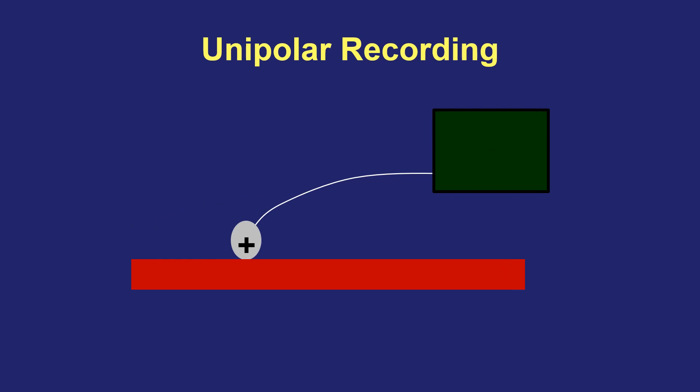Similarly, if the unipolar electrode is positioned in the middle of myocardial tissue and the wavefront originates immediately underneath this electrode traveling in more than one direction, you will only see a negative deflection in the unipolar recording because wavefronts are only moving away from the recording electrode and never toward it. You can take advantage of this fact when using a catheter to map the origin of a focal arrhythmia: when you are at the site of origin, you will only see a negative deflection and no positive deflection in the unipolar electrogram.